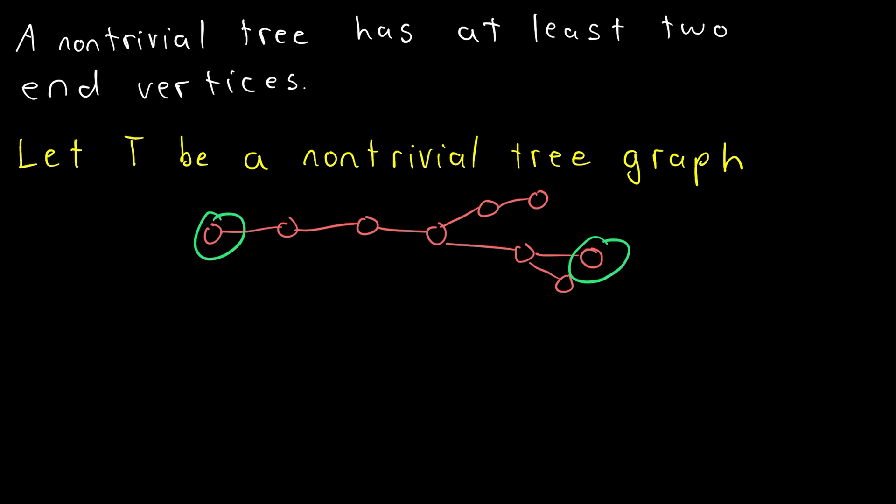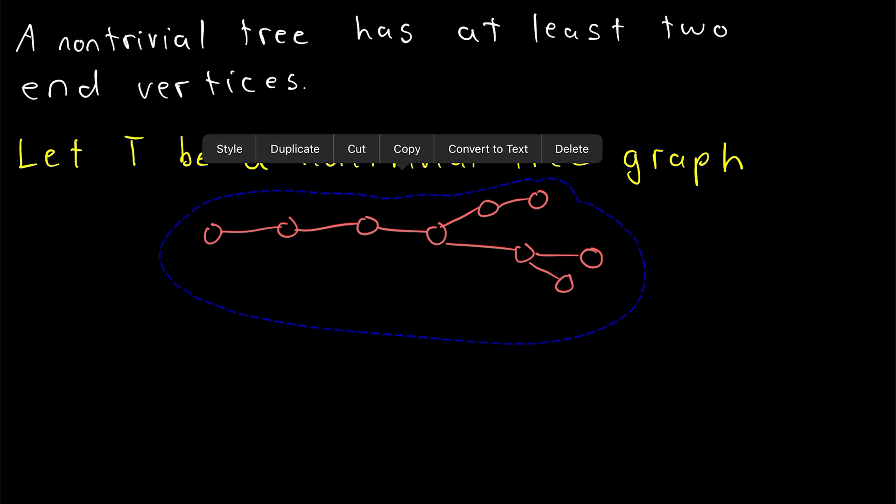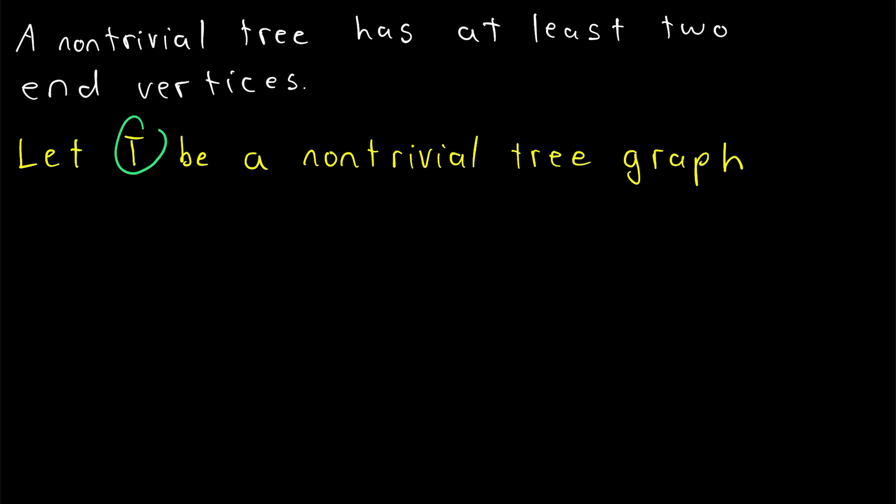And if these end vertices had any other neighbors on the path besides the vertex immediately following or preceding them, depending on their position, then what would we have? We'd have a cycle, which can't be in a tree graph. So this seems like a reasonable place to start. Let's try taking a longest path in our graph T, and see if we can show that the starting and ending vertex of that longest path must both be end vertices.